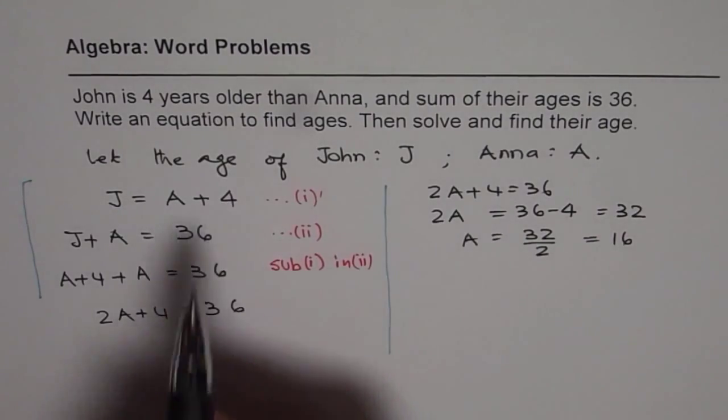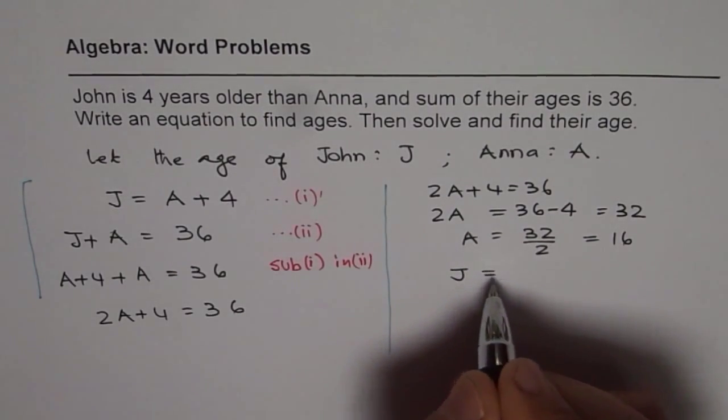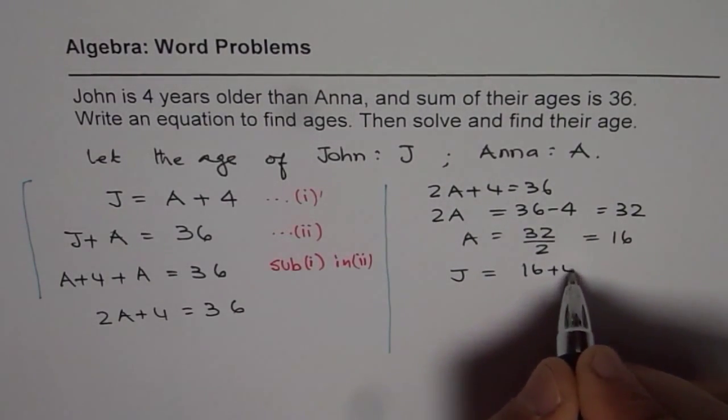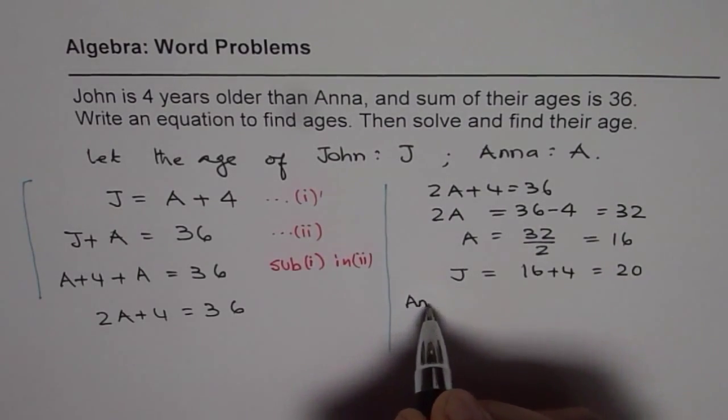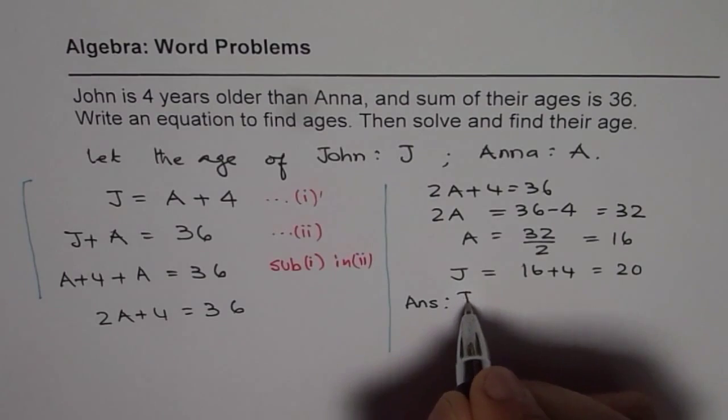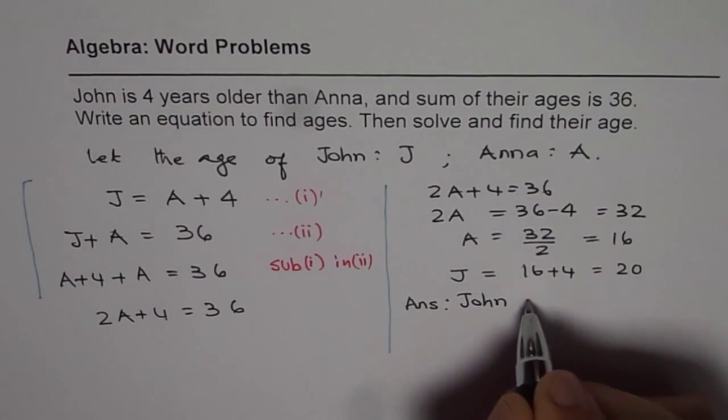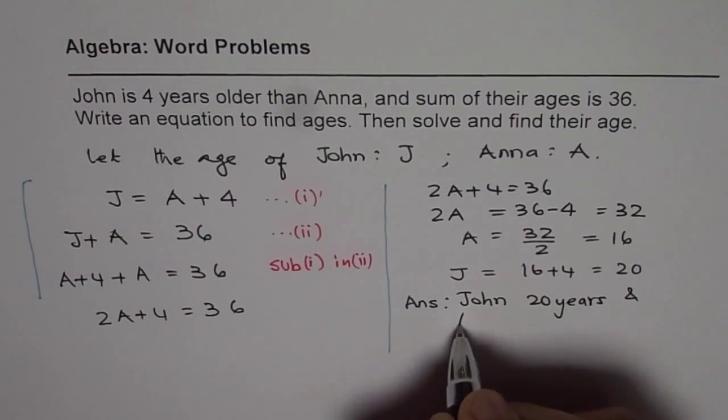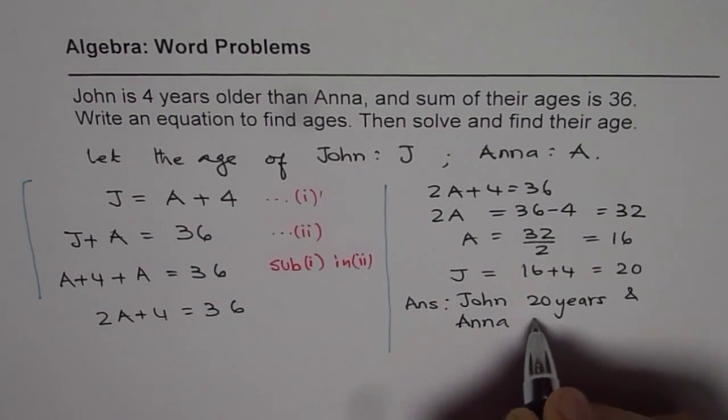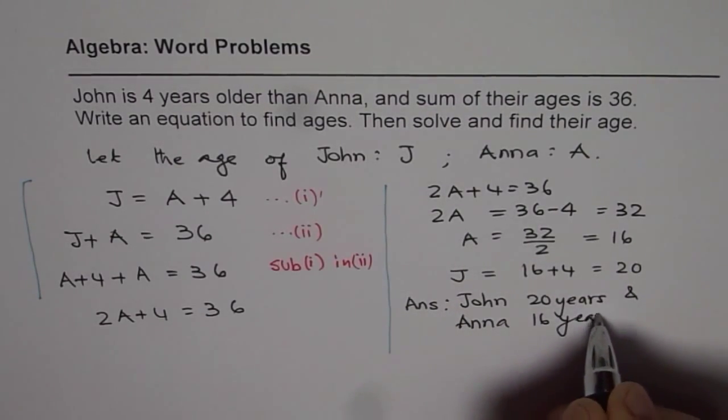So Anna's age is 16. For John, we can add 4 to that to find John's age. So John's age is 16 plus 4, which is 20. So we get our answer: John is 20 years and Anna is 16 years.